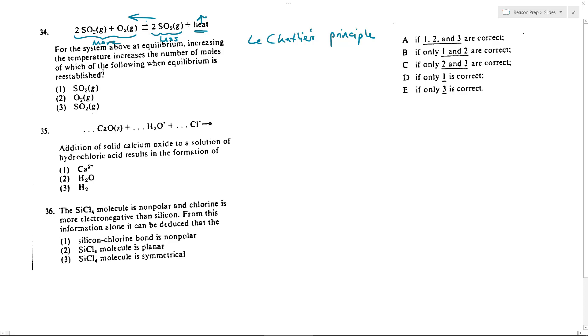So we look at our choices, which one would have increasing number of moles? Well it should be SO2 and O2 as we see on the left. So that would be 2 and 3 and that gets us for problem 34 choice C.